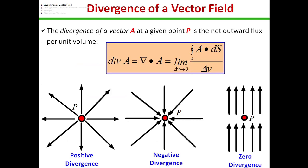As I have already given the hint about the divergence of a vector field in the last video, basically the divergence of a vector field A at any point P is defined as total net outward flux per unit volume, which can be written as divergence of A — that means del·A — is equal to limit delta-V tends to zero of the closed surface integral A·dS divided by delta-V, where the closed surface integral A·dS is defined as total net outward flux. We will discuss more about the flux in electrostatics.